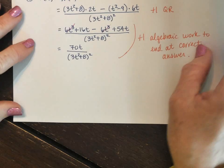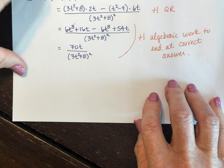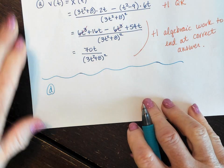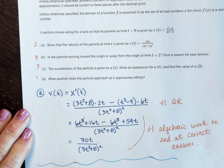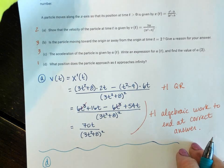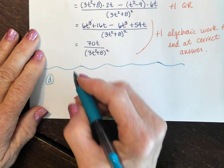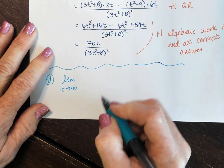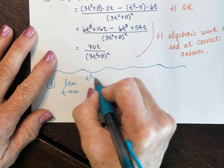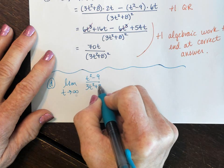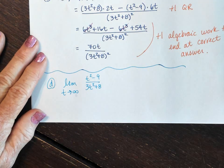Okay, part D. Part D is actually pretty short, so I'm going to squeeze it on the bottom of the page down here. Part D: what position does the particle approach as t approaches infinity? So they are asking you to find the limit as t approaches infinity of that function (t² - 9)/(3t² + 8).